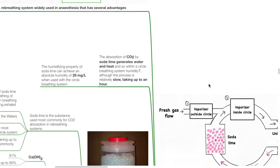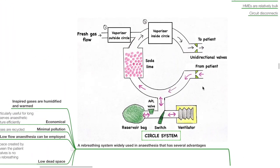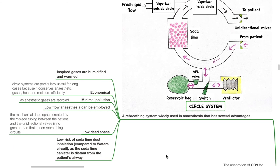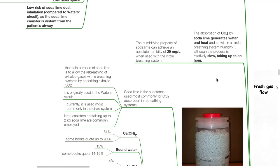Circle systems. This is a rebreathing system that can humidify inspiratory gases and is widely used in anesthesia. Inspired gases are humidified and warm; it is economical as it conserves anesthetic gases, heat and moisture; there is minimal pollution; low-flow anesthesia can be employed; and there is low dead space. The absorption of CO₂ by soda lime generates water and heat, so within a circle breathing system humidity increases with time. Although this process takes up to an hour, the humidifying property of soda lime can achieve an absolute humidity of 29 mg/L when used within the circle breathing system.